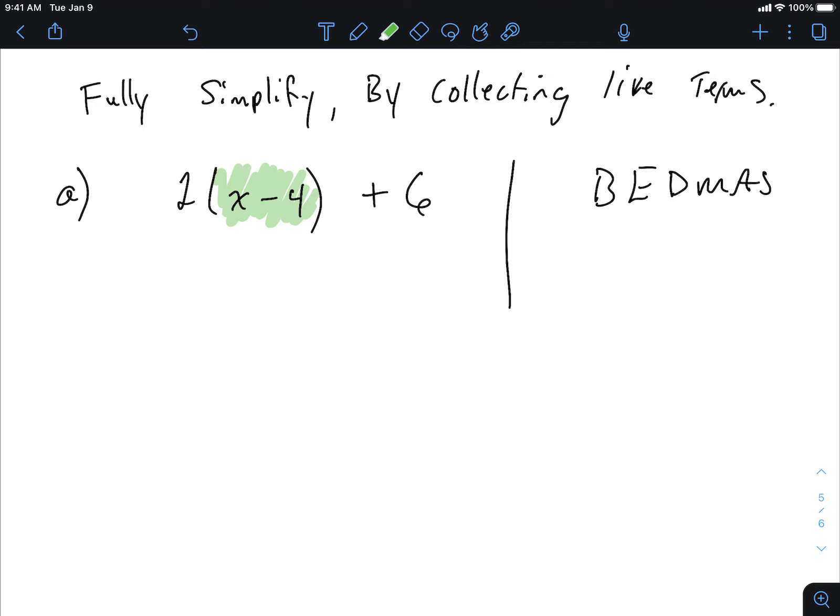But the problem with BEDMAS in this particular question is that there's nothing to be done in here. Those are not like terms. You cannot add the rods and the little squares together. So there's nothing to be done with the brackets. There are no exponents in this question. There is no division in this question, which gets you to the multiplication piece. What's multiplication? It's an area model, where we did length times width.